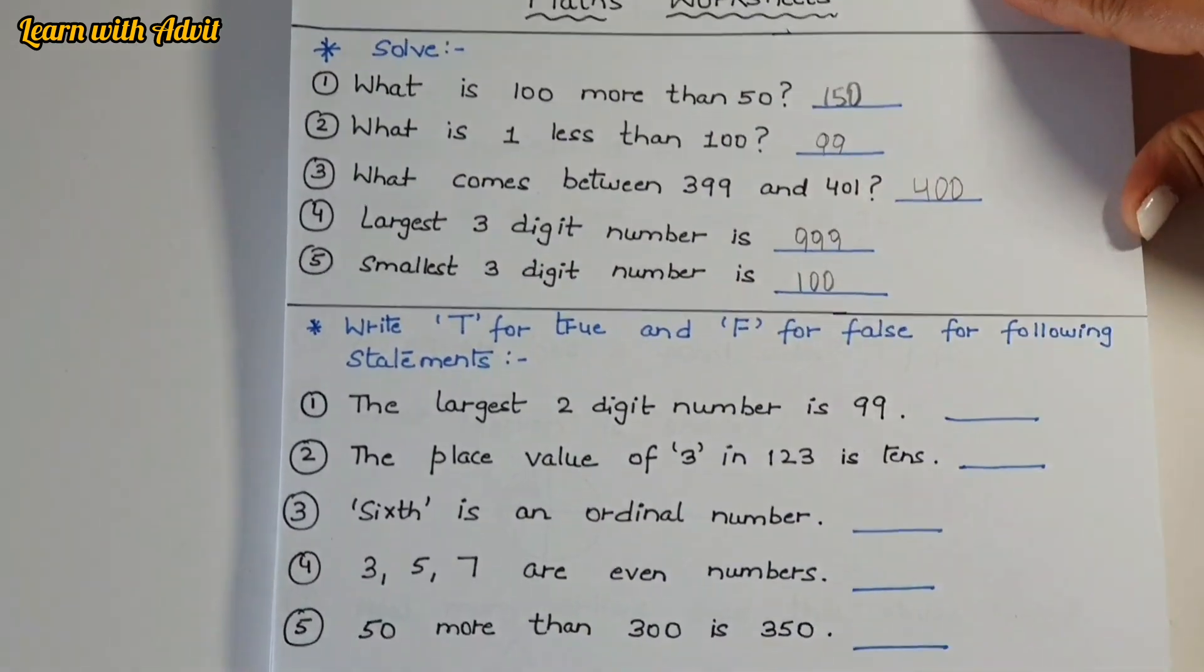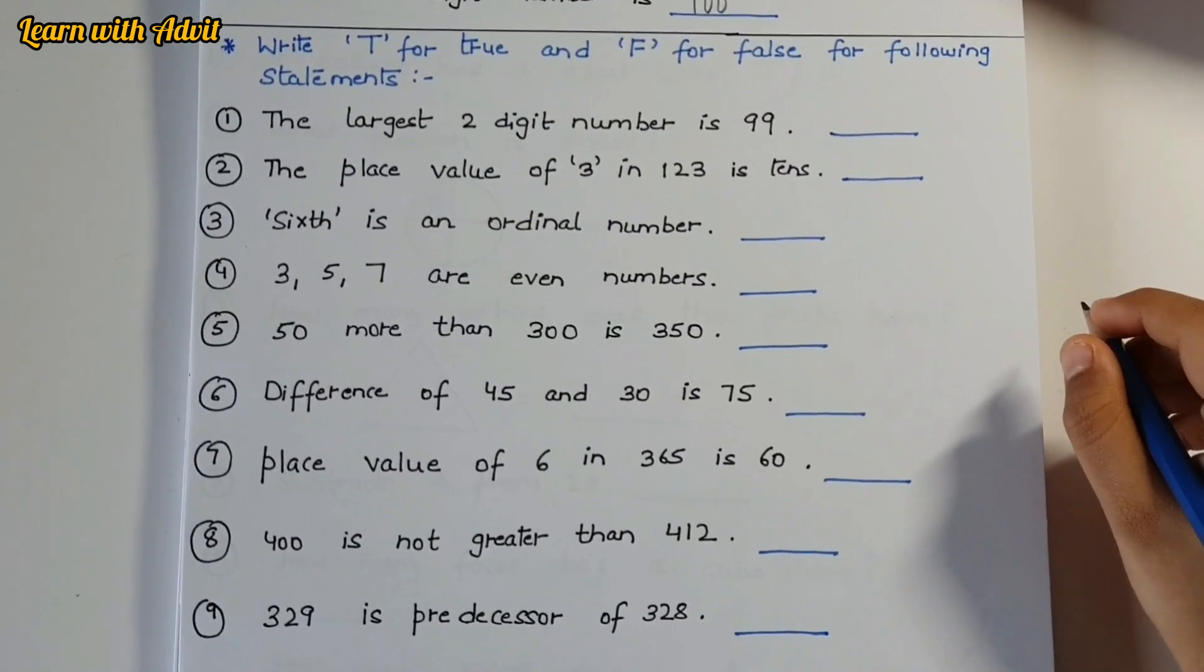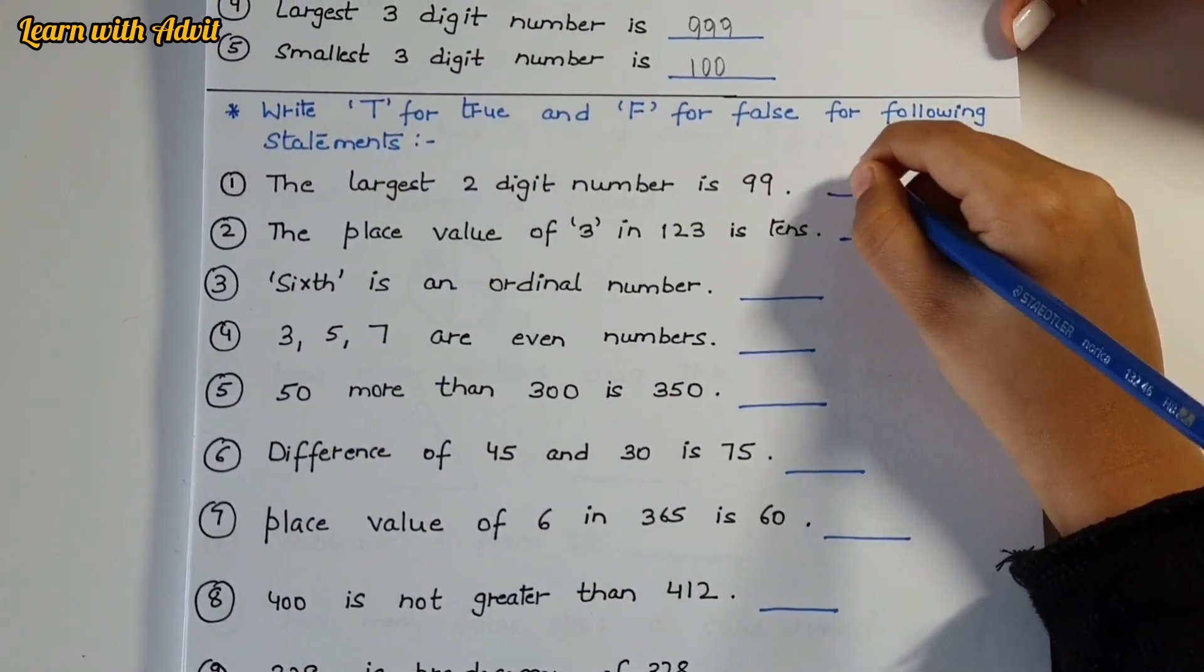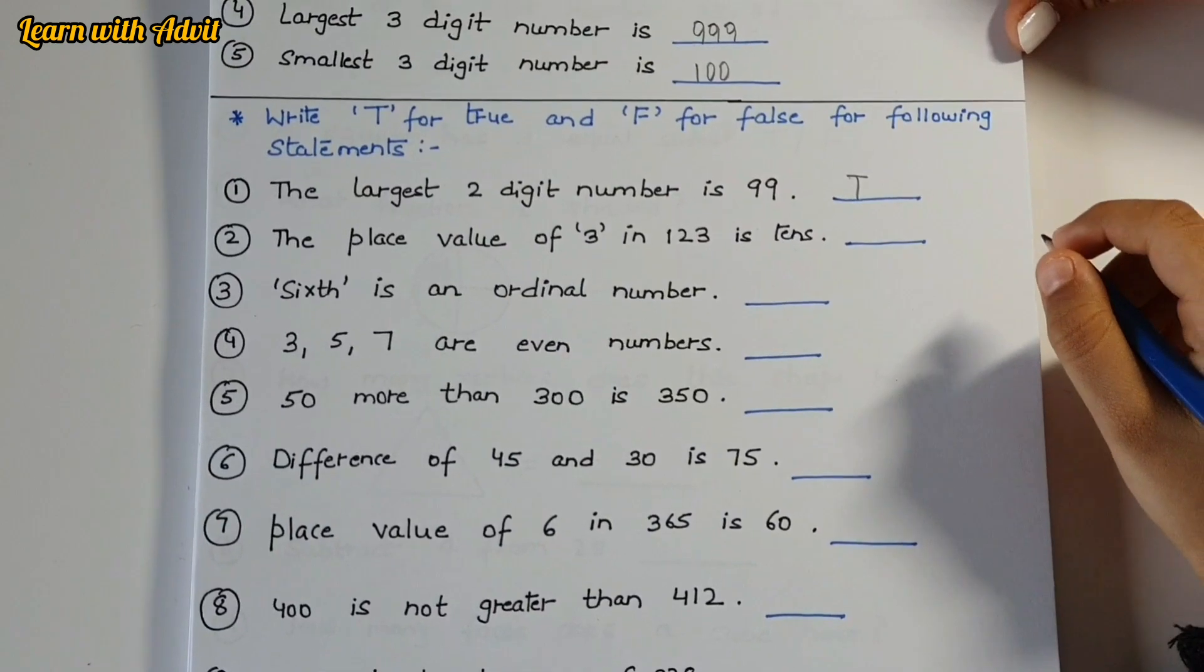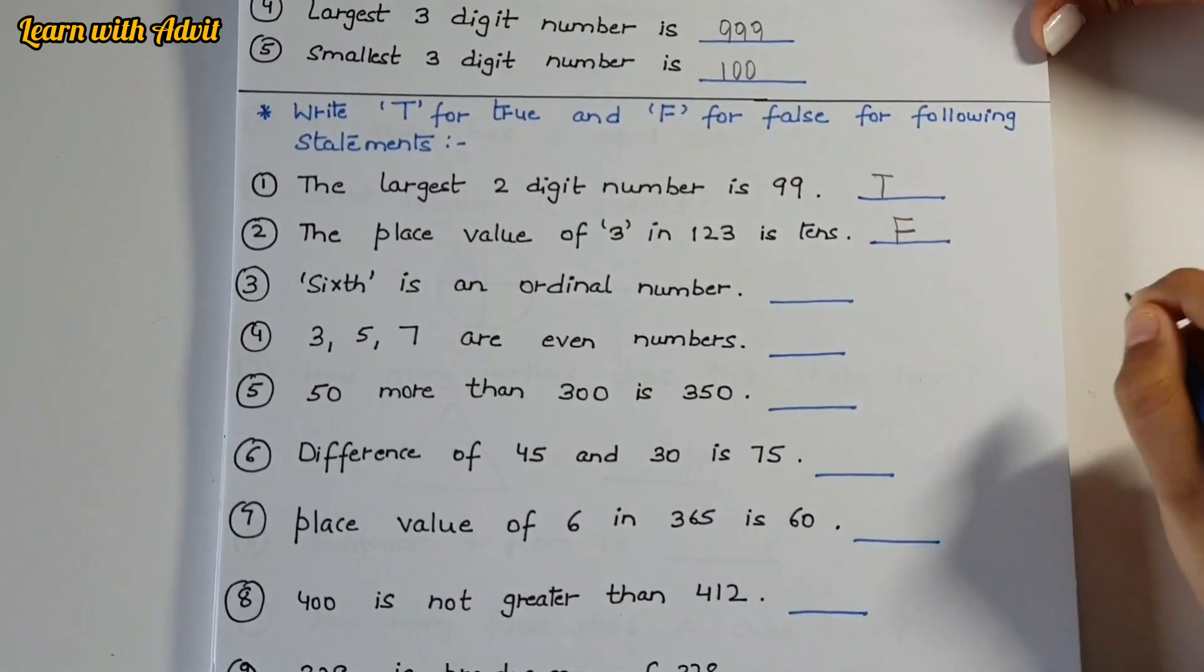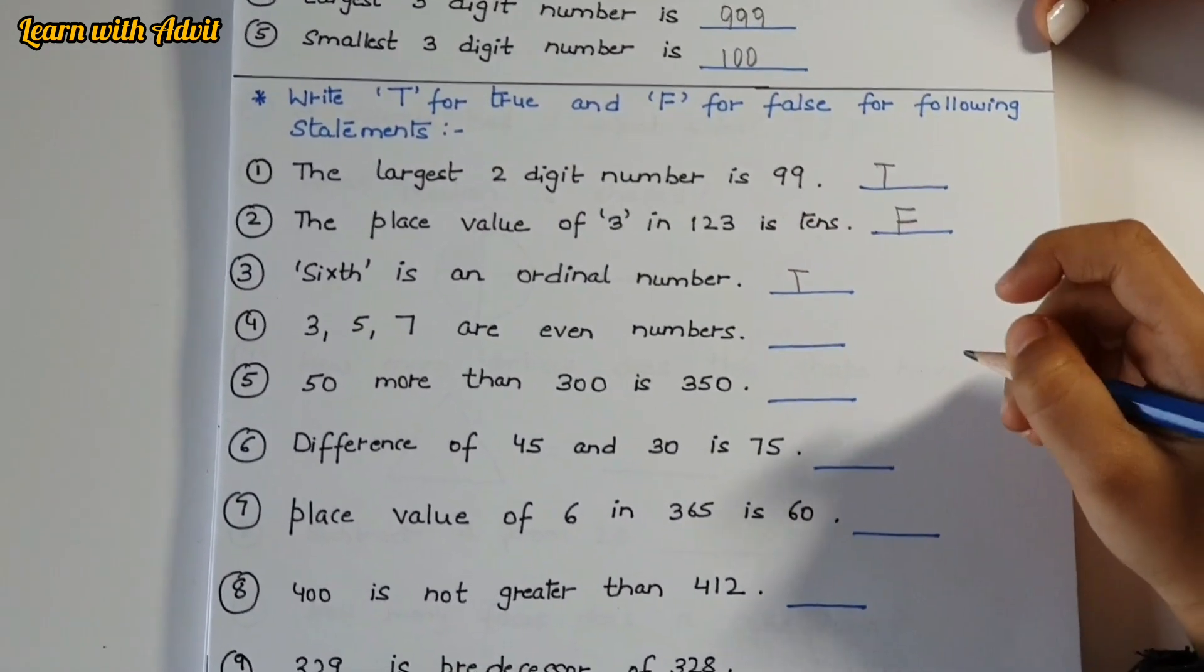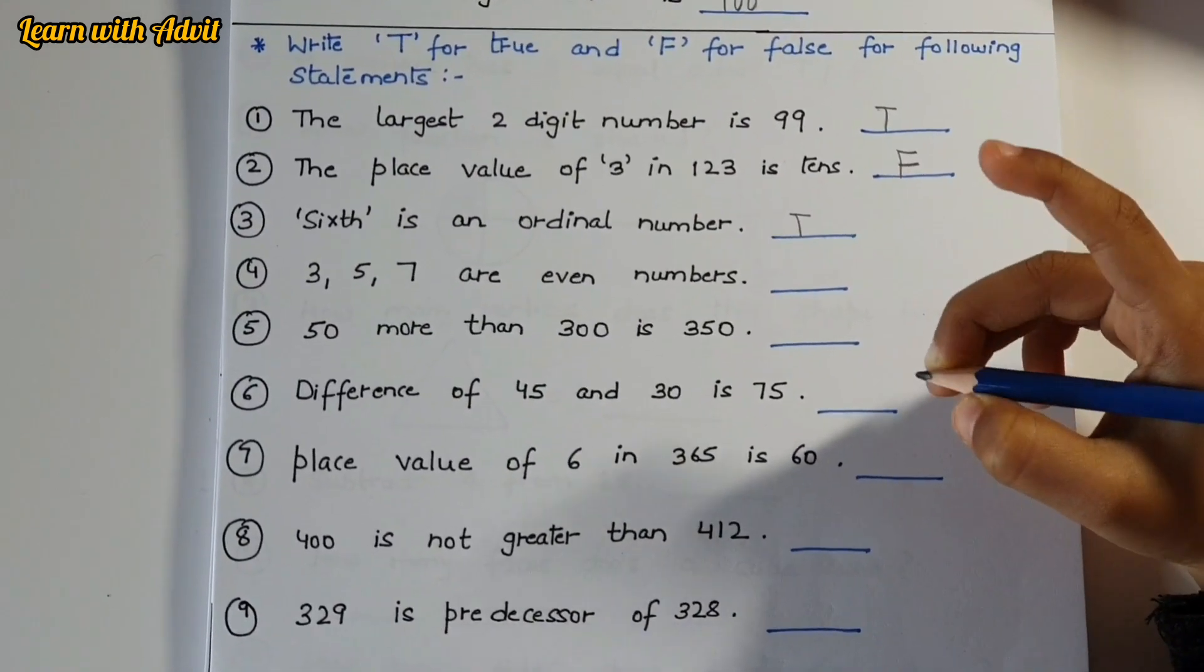Write T for true and F for false for following statements. The largest two digit number is 99 - yes, very good. The place value of 3 in 123 is in tens - it's ones. 6 is an ordinal number - yes, because ordinal number shows position of numbers like first, second.